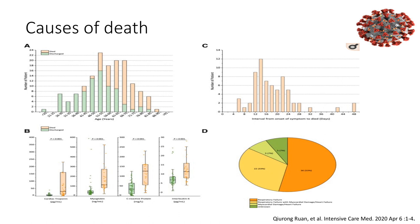A pie chart demonstrates the causes of mortality: mainly respiratory failure in the majority of patients, and in 22% it was respiratory failure associated with myocardial damage or heart failure. Then 5% was heart failure alone, and another 5% was of unknown causes.